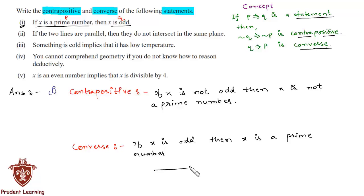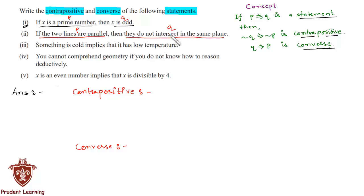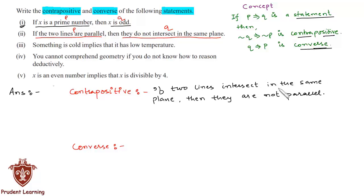The second statement is: if two lines are parallel, then they do not intersect in the same plane. We call the first part p and the second part q. The contrapositive would be: if two lines intersect in the same plane, then they are not parallel.